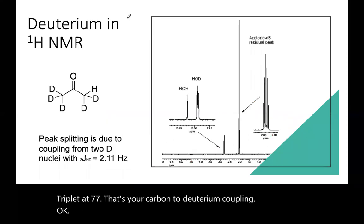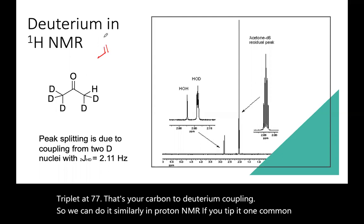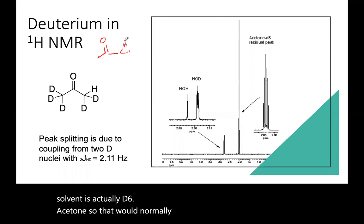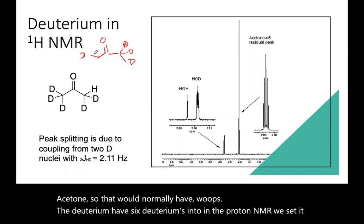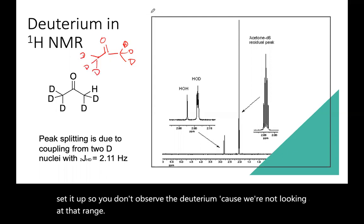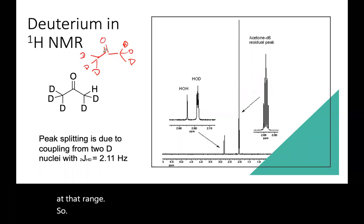Okay, so we can do it similarly in proton NMR. One common solvent is actually D6 acetone. So that would normally have six deuteriums. And so in the proton NMR, we set it up so you don't observe the deuterium because we're not working at that range.